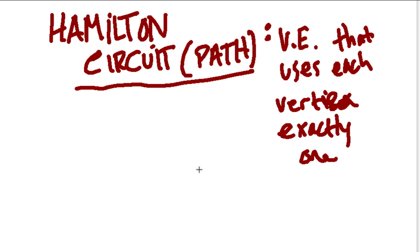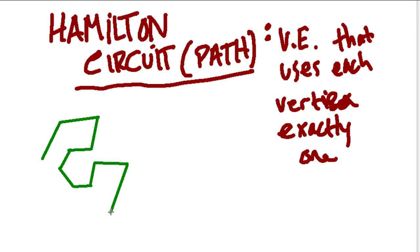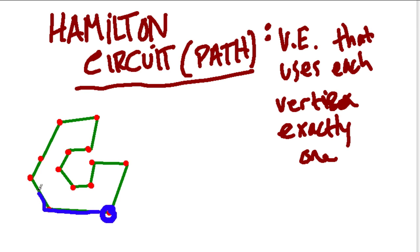Let's look at two quick examples. First, this shape here — it's a simple vertex edge graph, like a big letter C, with vertices on it. If we start anywhere on this graph at any vertex and walk around it, you can get all around this graph using each vertex exactly once. That's a Hamilton circuit.